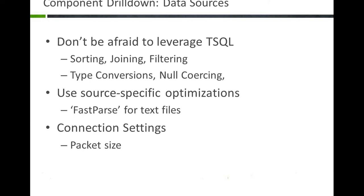Things like sorting and aggregating data — if we're reading data out of SQL Server, Oracle, or DB2 — we should use the native query language to do as much as possible inside that language. Things like type casting and null coalescing all make sense there. If you're reading data with flat files, there's a property called fast parse which is fantastic for scaling performance — we'll cover that in a second.